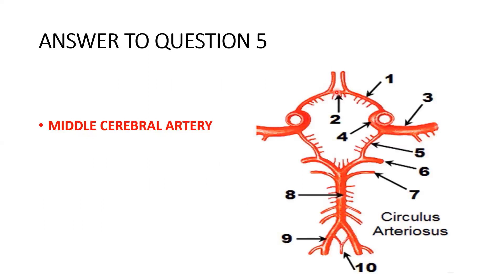From the diagram, this is the anterior communicating artery and this is the anterior cerebral artery. This big blood vessel is the internal carotid artery. The branch labeled number three is a branch of the internal carotid artery that lies outside the Circle of Willis — this is the middle cerebral artery. Even though it branches from the internal carotid artery, the middle cerebral artery does not form part of the Circle of Willis, unlike the anterior cerebral artery which does.